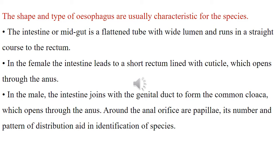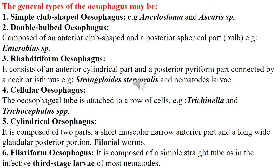The number and pattern of distribution of papillae aid in identification of species. The general types of oesophagus include: simple club-shaped oesophagus, as in Ankylostoma and Ascaris species; double-bulbed oesophagus, composed of anterior club-shaped and posterior spherical bulb, as in Enterobius species; and rhabditiform oesophagus, consisting of an anterior cylindrical corpus and a posterior pyriform bulb connected by a neck or isthmus, as in Strongyloides and nematode larvae.